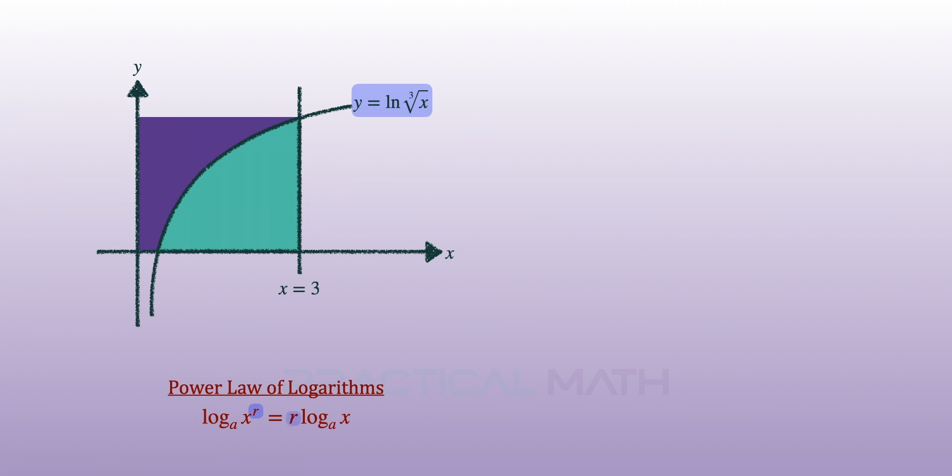From the power law of logarithms, log x to the power of r to the base of a is equivalent to r times log x to the base of a, where r which is the power can be shifted to the front of the logarithm.